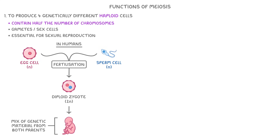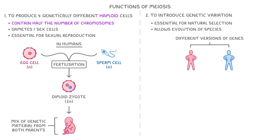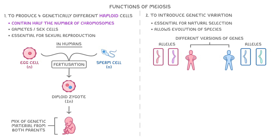Another key function of meiosis is to introduce genetic variation, which is essential for natural selection, a mechanism that allows the evolution of species over time. This is partly because each parent has different versions of certain genes, and we call these different versions alleles. Importantly, these alleles then get randomly sorted into the gametes produced by each parent, so overall there's a lot of variation in the gametes each parent produces.